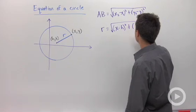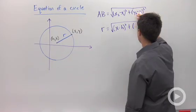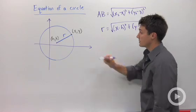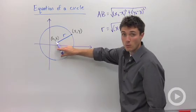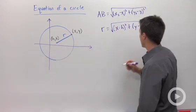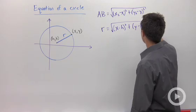Now let's look at our y's. Our y2 is y, and I'm going to subtract k, because k is the y coordinate of the center of my circle, and I'm going to square that.